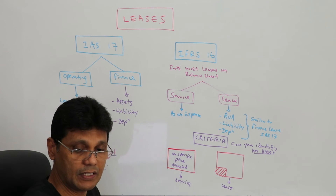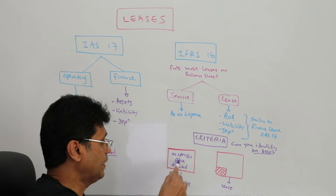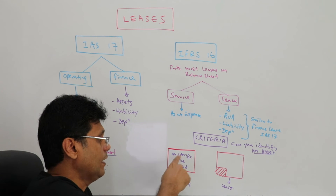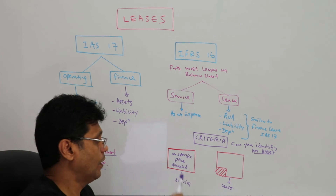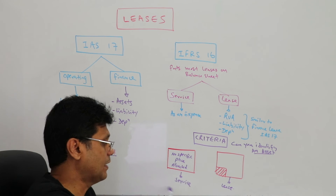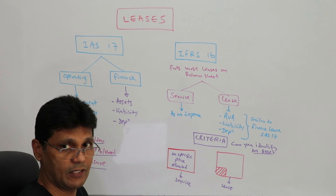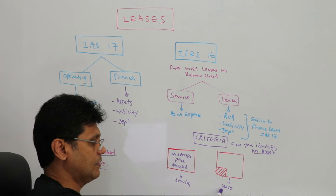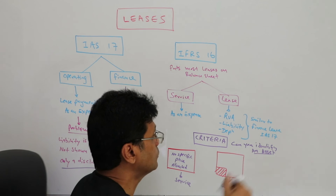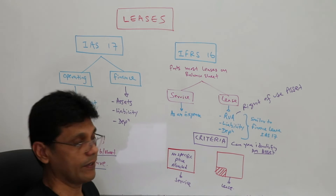However, if the contract doesn't allocate a particular place and the owner of the warehouse can exchange or reallocate the space — so you are renting only a certain number of square meters and the owner can place you anywhere — then you cannot identify an asset. In that case it must be treated as a service contract. If you can identify an asset, it is a lease contract and the lessee must recognize a right-of-use asset.